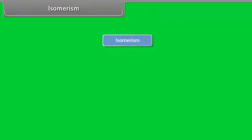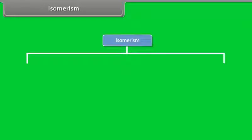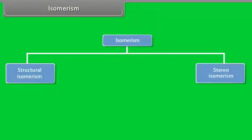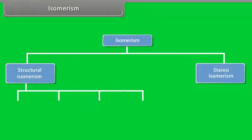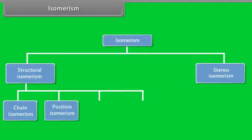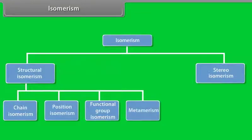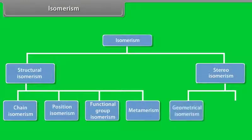Isomerism can be grouped into structural and stereo-isomerism. Structural isomerism can be subdivided into chain-isomerism, position-isomerism, functional-isomerism, and meta-isomerism. Stereo-isomerism is further categorized into geometrical and optical-isomerism.